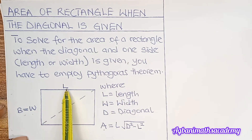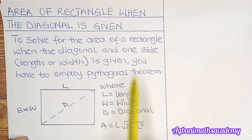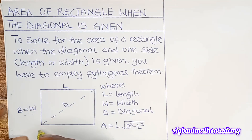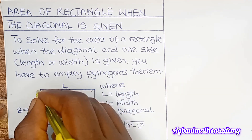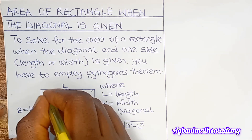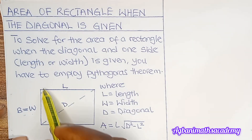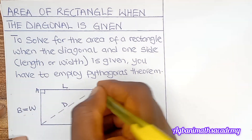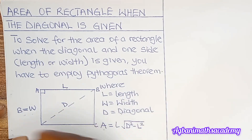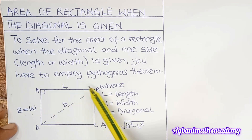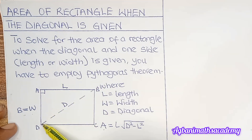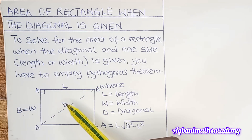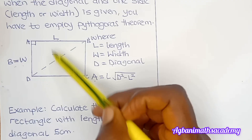To solve the area of a rectangle when the diagonal and one side — either the width, breadth, or length — is given, you have to employ Pythagoras theorem. Why is this necessary? If you look at this shape, there is a right angle triangle here; this angle is 90 degrees. Let's label the points A, B, C, and D.